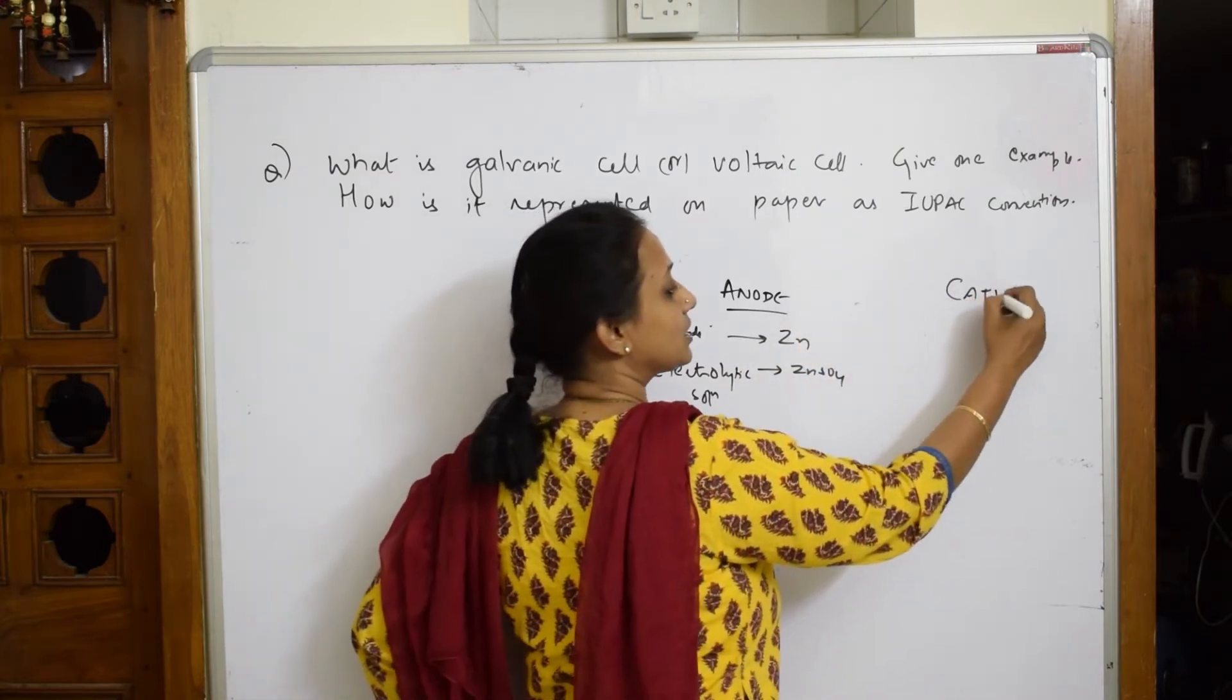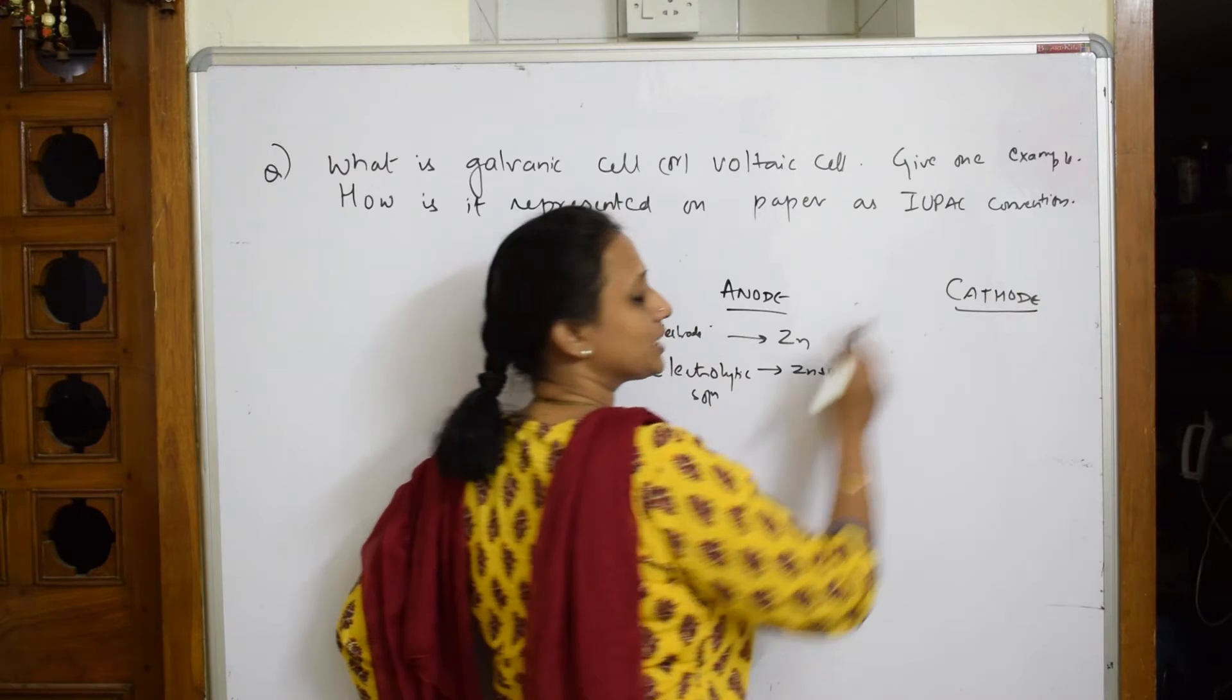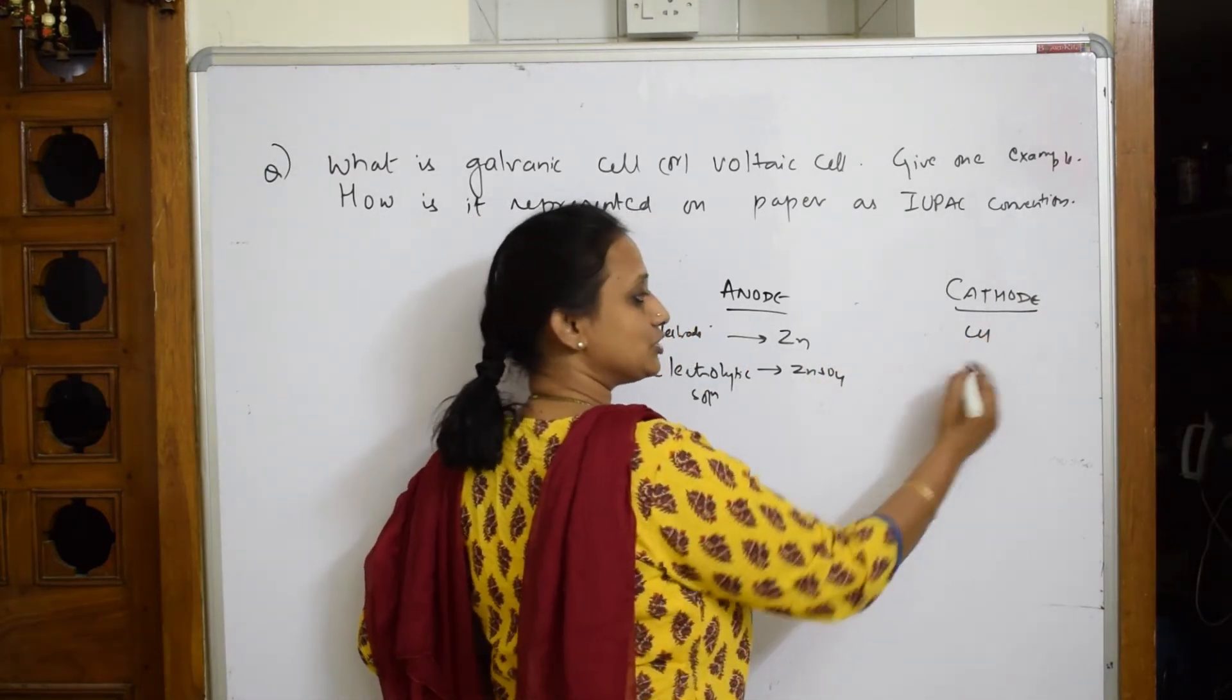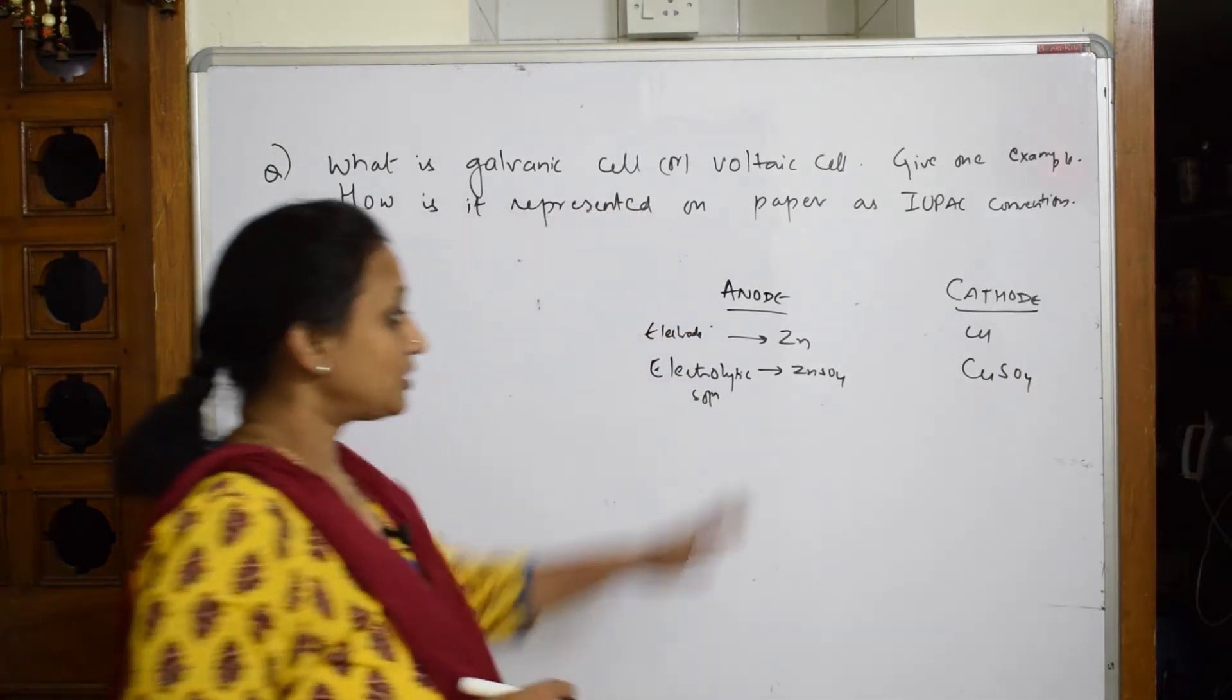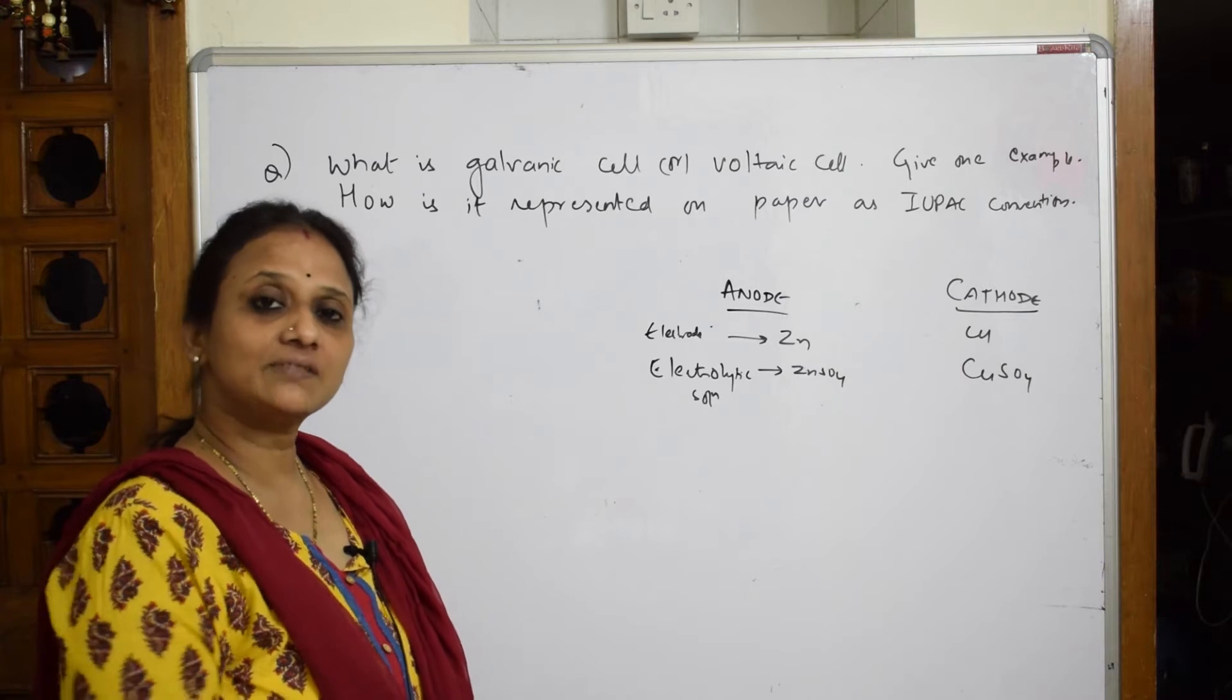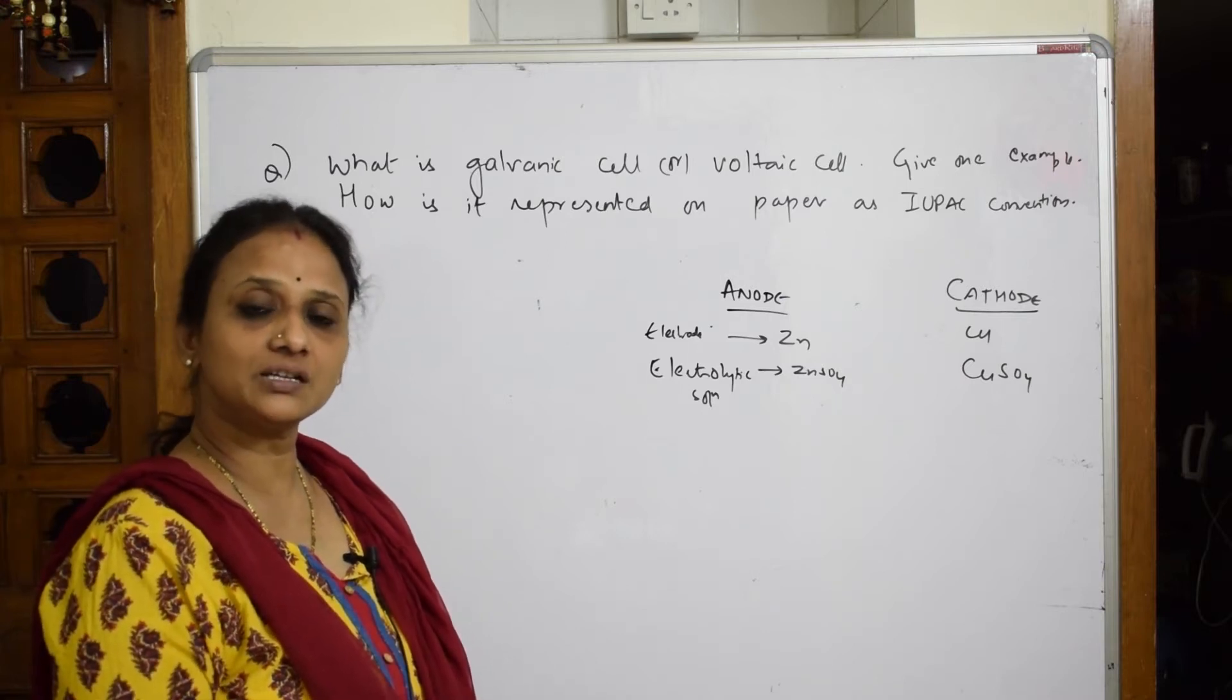Under cathode, I'm going to take the electrode, which electrode? I'm going to pick up copper this time. So the electrode here is copper and the electrolytic solution, the corresponding one is copper sulfate. Now they are asking you to write what is galvanic cell.